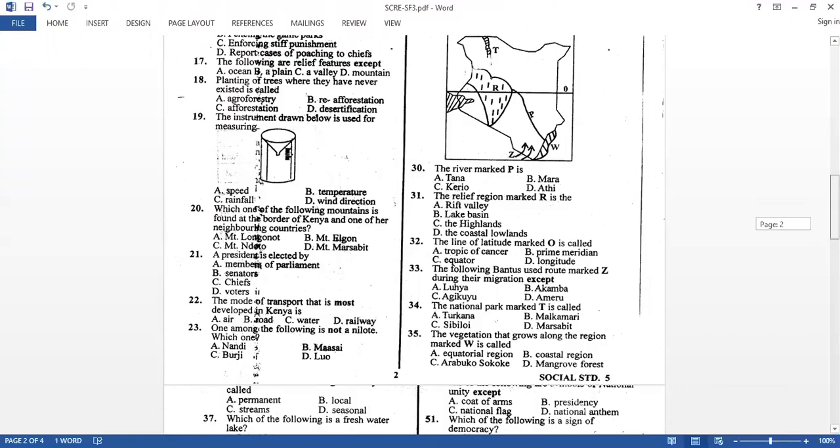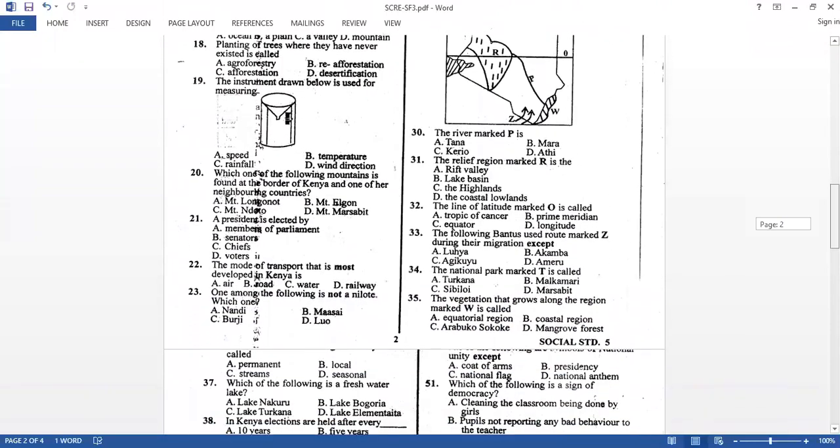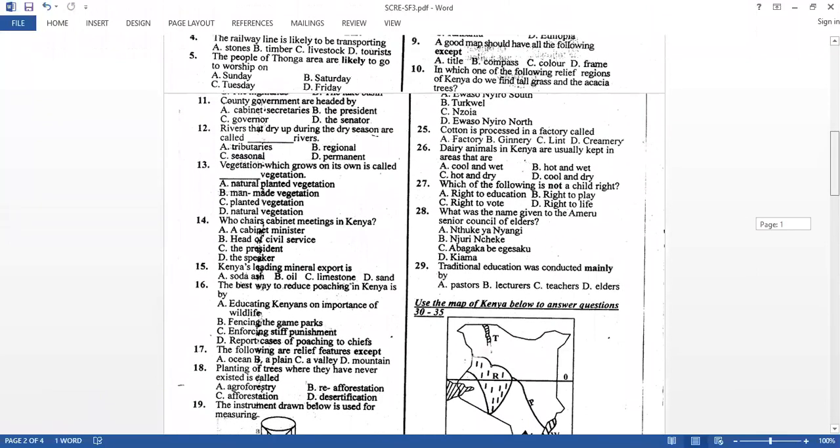So let's move to number 24. Very easy. Number 24, if you look at the paper that I sent you is about Lorian Swamp. So Lorian Swamp has its mouth in river water. So which river drains its water into Lorian Swamp? It is Ewaso Njiro. Remember river Turkwel drains its water into Lake Turkana. Then Ewaso Njiro South drains its water into Lake Natron. Then Nzoia River, Lake Victoria.